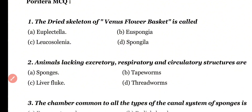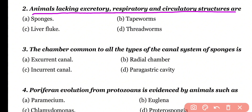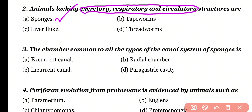Question number 2. Animals that are lacking excretory, respiratory and circulatory structures are: sponges, tapeworms, liver fluke, or threadworms. Correct answer is option A. Sponges are the animals that have no respiratory, excretory, and circulatory system.